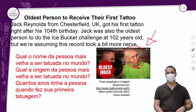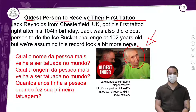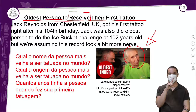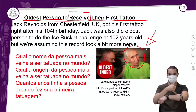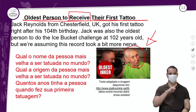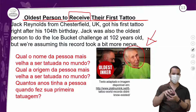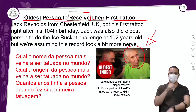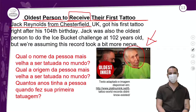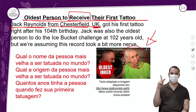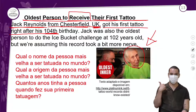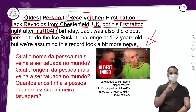Oldest person to receive their first tattoo — a pessoa mais velha a receber sua primeira tatuagem. Então aqui no título eu já tenho a ideia de que é sobre uma pessoa que recebeu a tatuagem pela primeira vez, só que essa pessoa é mais velha. Jack Reynolds é o nome da pessoa. From Chesterfield, UK — ele é dessa cidade na Inglaterra. UK got his first tattoo right after his 104th birthday — ele fez sua primeira tatuagem logo depois do seu aniversário de 104 anos.